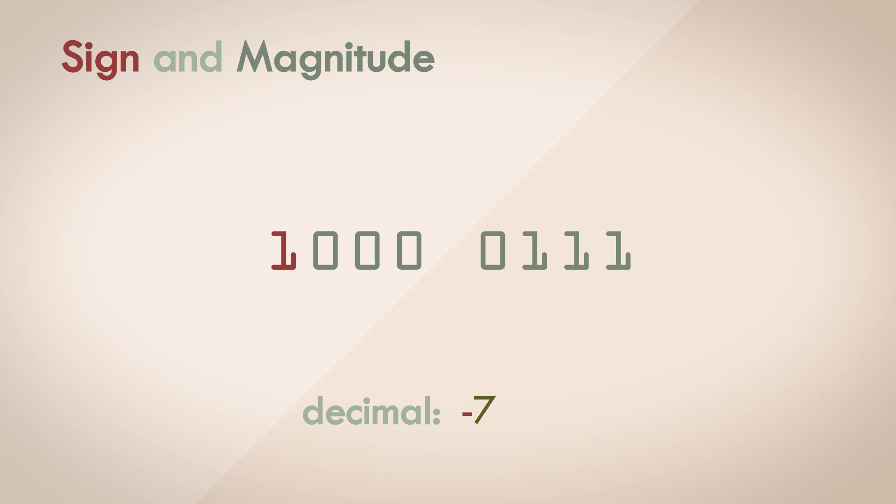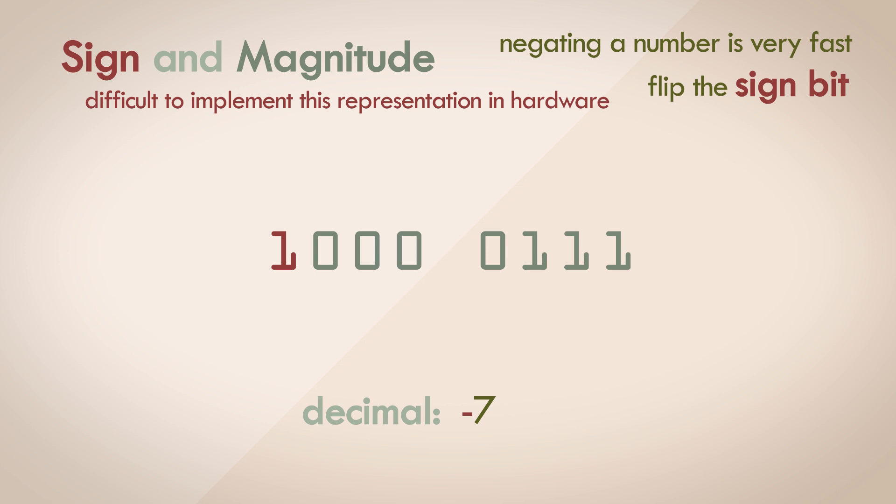Using this representation, negating a number is a really fast operation. Just flip one bit, the most significant bit. Conceptually at least, this looks like a sound model. It's easy to visualize and understand, but implementing this in hardware is difficult. There are several problems associated with this model.